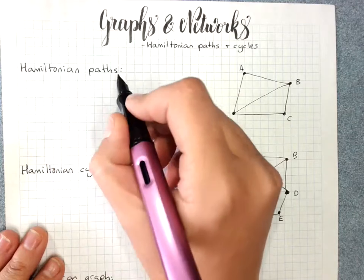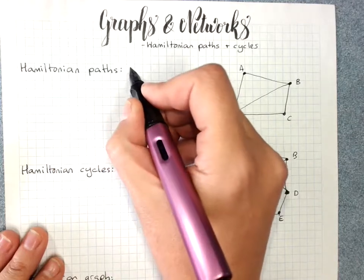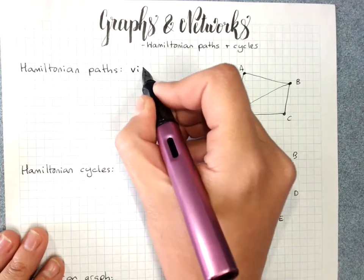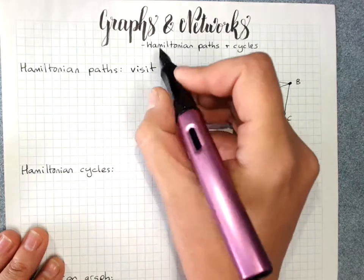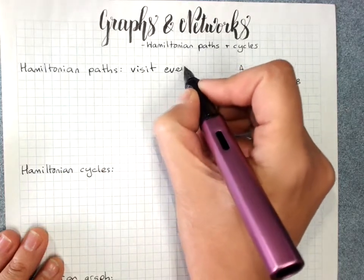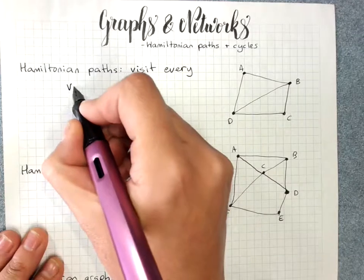So a Hamiltonian path visits every vertex of a graph.